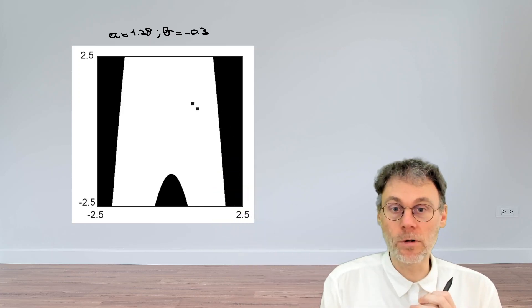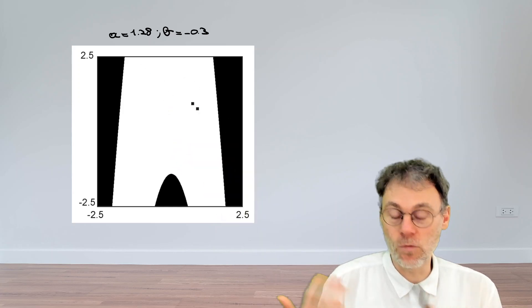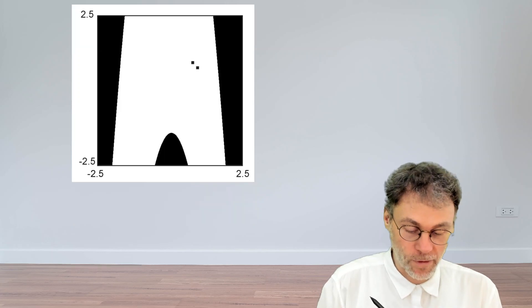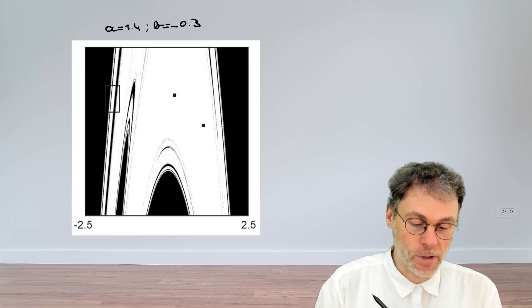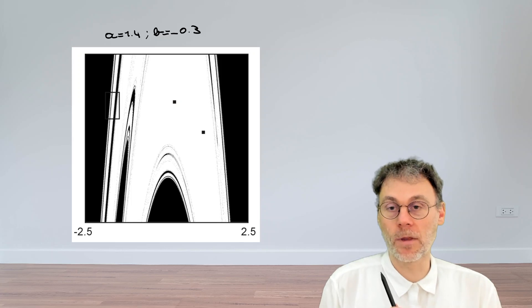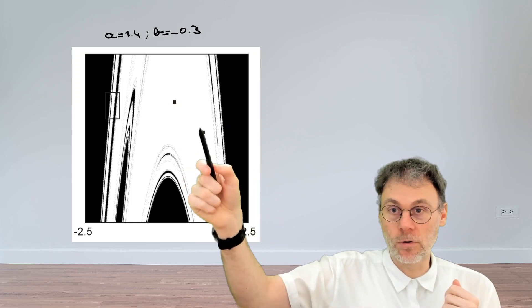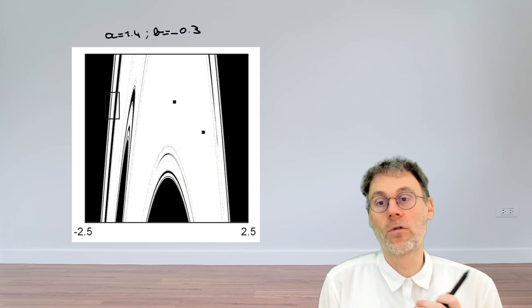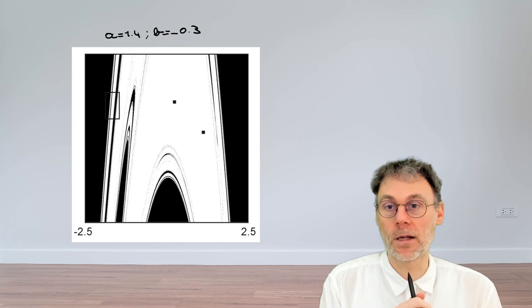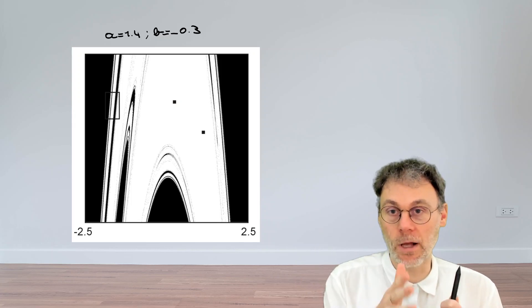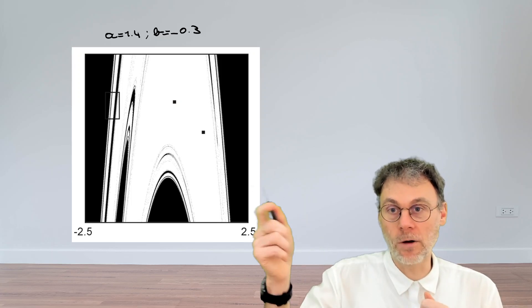But what we're now going to do is slightly increase the value of a and see what happens. If we have a equals 1.4, we end up with a completely different looking picture. Again we have a period two point, now over there, and we've plotted the points in white that end up at that period two point and the points in black that run away towards infinity. But now something very interesting happens - the boundary between these two regions is much more complicated.